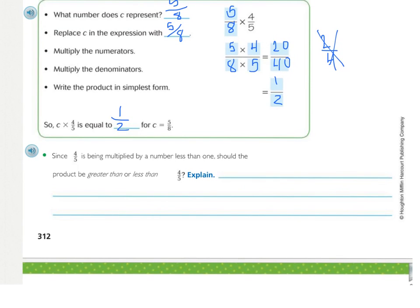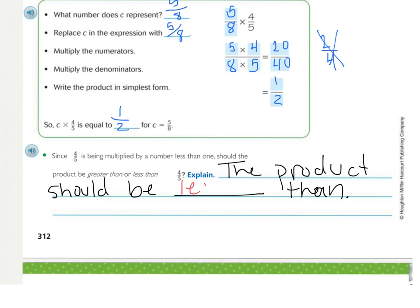Now looking right down here. Since four fifths is being multiplied by a number less than one, should the product be greater than or less than four fifths? They're thinking fraction four fifths is being multiplied by a number less than one. That would be another fraction. Should it be greater than or less than? Write a sentence. Use the word product in your sentence. The product should be less than because you are finding a part of a part.